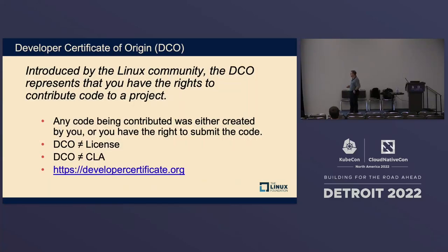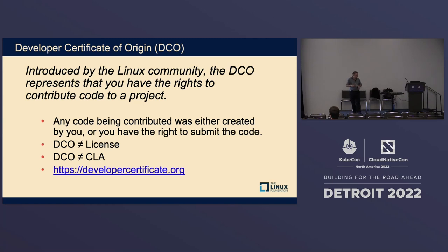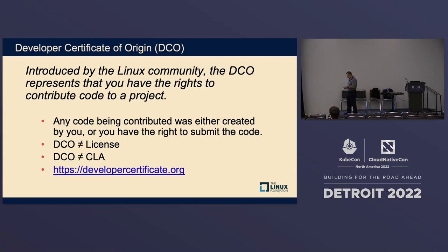There's also something called a DCO — Developer Certificate of Origin — created by the Linux community. A DCO is a bit different than a CLA. A DCO is essentially a certificate or representation saying 'I am the author of the code or I otherwise have the right to contribute the code.' There are some similarities between the two, but they're not the same.